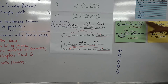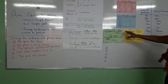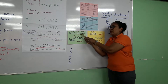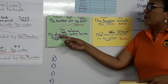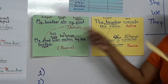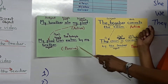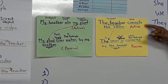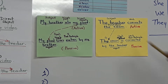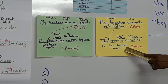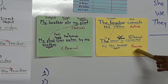We have some other examples. 'My brother ate my food' — I change the direct object and say: 'My food was eaten by my brother.' 'The teacher corrects the exam' is active. 'The exam is corrected by the teacher' is passive. That is how we change from active to passive.